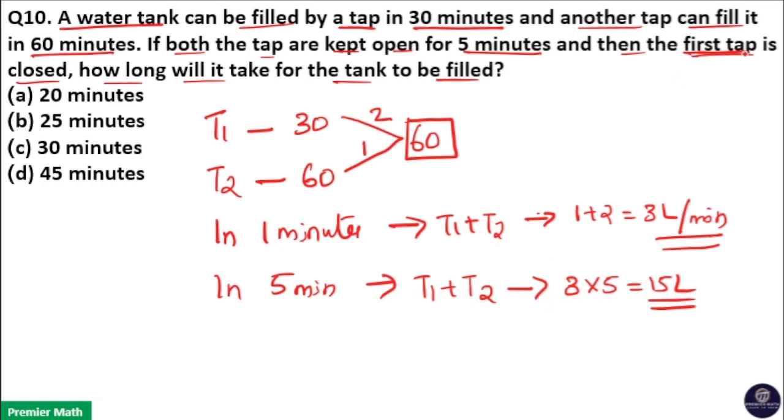Then first tap is closed. This tap is closed and tap 2 only fills. Tap 2 efficiency is 1 liter. That means the remaining is 60 minus 15 which is equal to 45 liters.